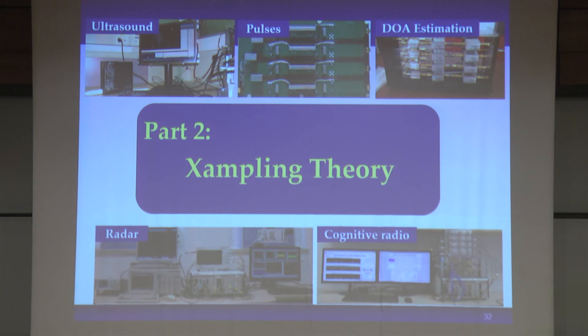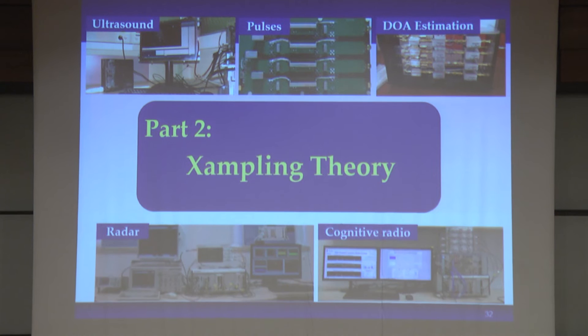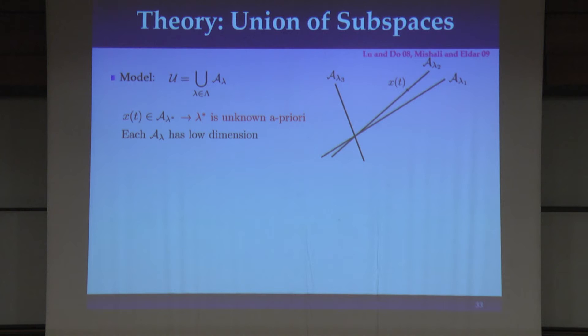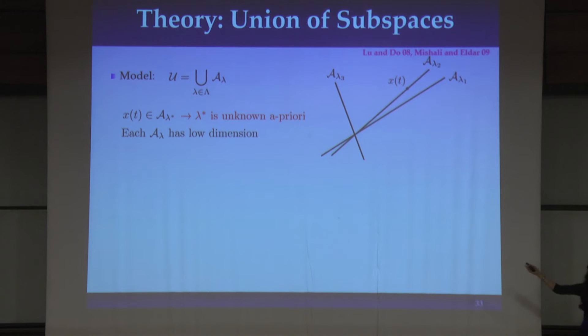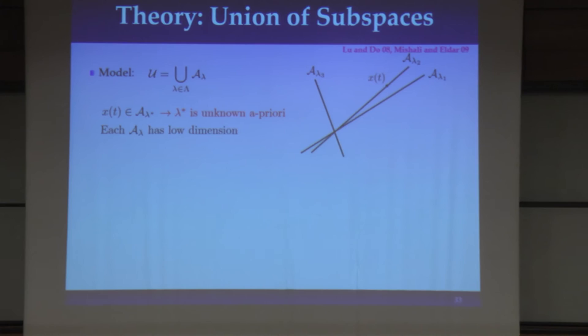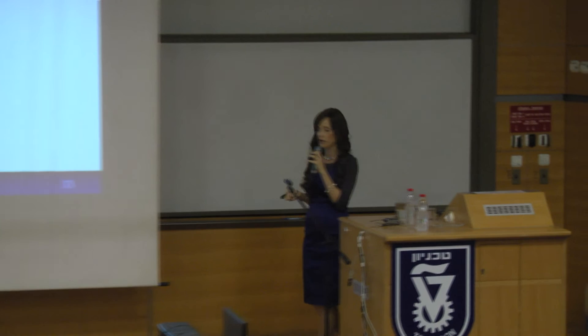We see that there are many examples where structure is prevailing in the signals. Now the question is how do we get all of these good results — how do we actually exploit that? To do that, we're going to introduce the sampling theory framework, which is actually very simple. The first part is having a mathematical model. The difficulty with all of these signals is first how to characterize them mathematically, and here it turns out that a very simple model is actually quite powerful. We're going to use what's called the union of subspaces model: our signal lies in some low-dimensional subspace, but that subspace is chosen out of possibly infinitely many choices. We have a huge amount of subspaces that may contain our signal, and we know our signal lies in one of them — we just don't know a priori in which one.